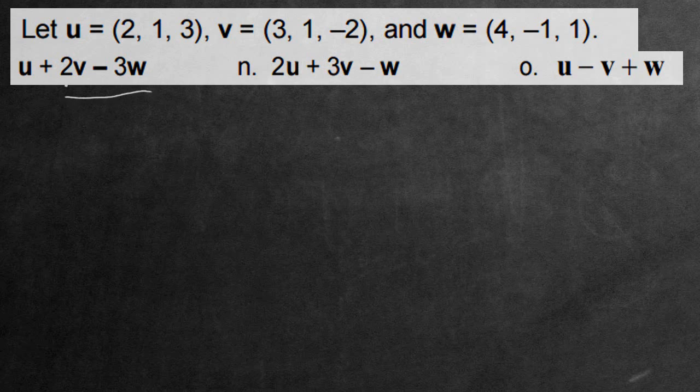Starting with the first question, we have the vector u, which is (2, 1, 3), adding on to 2v. Let's do that transformation. 2 multiply 3 gives us 6, then 2 multiply 1 is 2. Negative 2 multiply 2 is going to be negative 4, and that's the transformation for 2v.